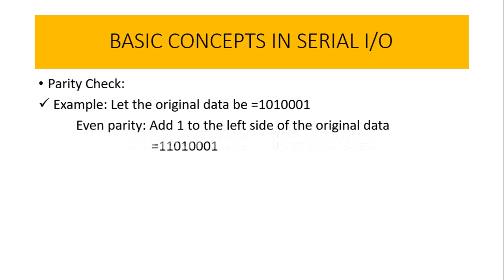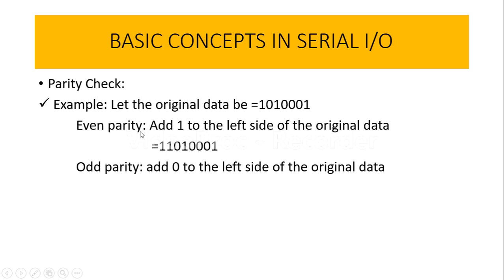When we talk about odd parity, the total number of ones in the actual data should be odd in number. Since in the original data we already have an odd number of ones, the parity bit we are going to add is 0. So we add 0 to the left hand side of the original data. If we use odd parity, our output will be 01010001, which is what we transmit instead of the original data. In the 8085 microprocessor particularly, we use the parity flag, which checks the parity information in each and every character.